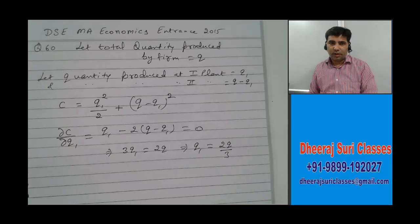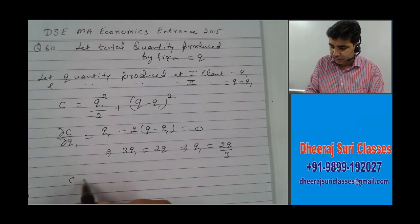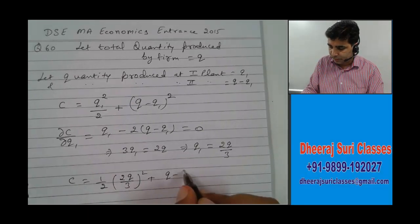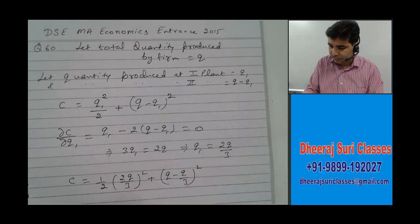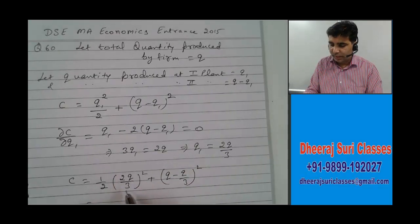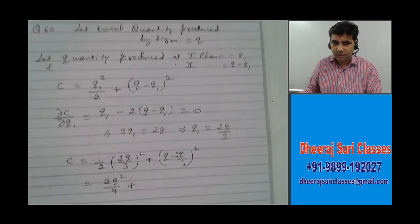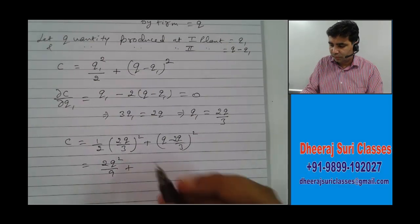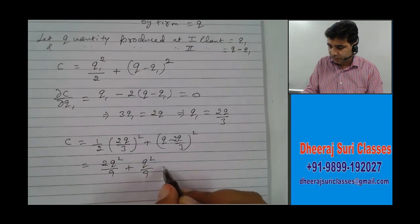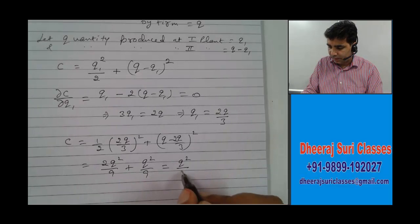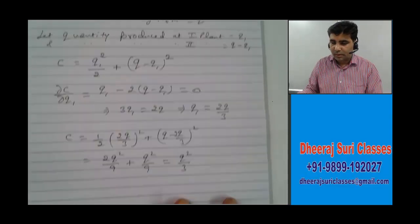Now that we have Q1 in terms of Q, we substitute back into the cost function. C becomes one-half of (2Q/3) squared plus (Q minus 2Q/3) squared. That simplifies to one-half of (2Q/3)² plus (Q/3)², giving us 2Q²/9 plus Q²/9, which adds up to Q squared by 3. This is the total cost function.